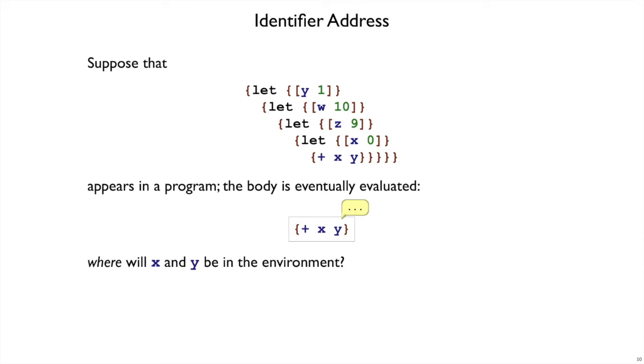If we have more bindings, we can keep playing this game, we just have to pay attention to more lets. So in this case, clearly, by the time we get to plus xy, x is going to be in the first position. Where is y going to be? That x will have been added to an environment that has a z, which is added to an environment that has a w, which is added to an environment that has a y. So y is going to be the fourth.